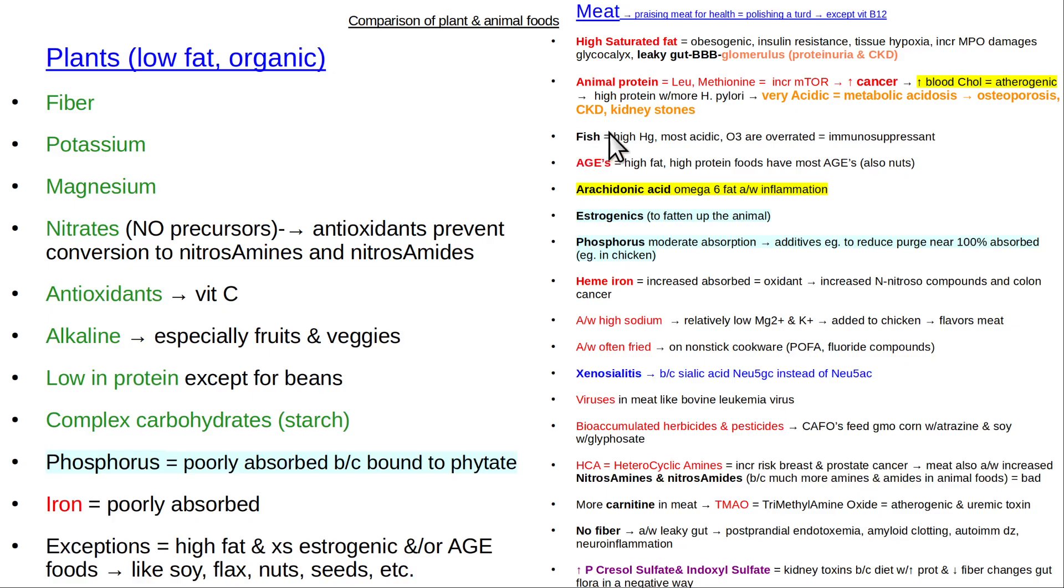So metabolic acidosis related to animal protein is a bad thing. It also creates an unfavorable microenvironment for cancer cells. It promotes the growth of cancer cells. Cancer cells are in competition with the surrounding adjacent cells, and acidity promotes growth of cancer over alkalinity, which promotes growth of the normal cells in comparison to the cancer cells.